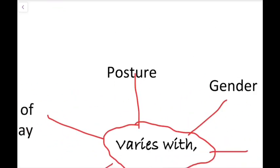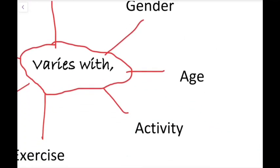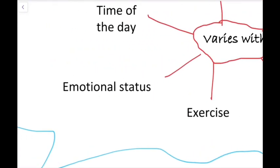Blood pressure also varies with posture — whether you are sitting, standing, or lying down — and with gender and age, since blood pressure tends to increase as you get older. Level of physical activity also matters: during exercise, the energy needs of tissues, especially skeletal muscles, increase, so the heart raises blood pressure to supply enough oxygen and glucose. Emotional status is another factor; when a person is stressed, blood pressure can go up.